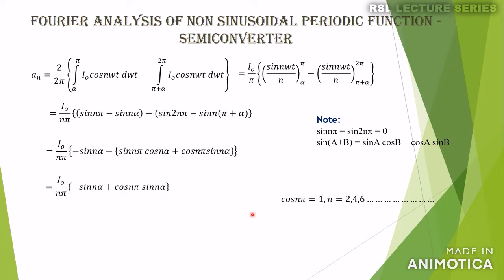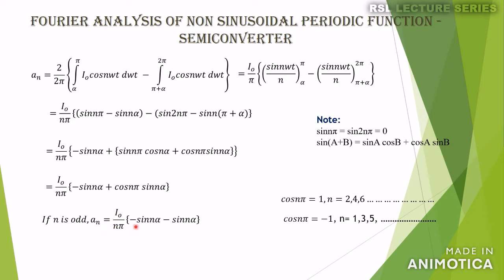cos(n·pi) equals 1 for n = 2, 4, 6, etc., and cos(n·pi) equals minus 1 for n = 1, 3, 5, etc. For odd values of n, An equals (I0/n·pi) times [minus sin(n·alpha) minus sin(n·alpha)], giving minus 2I0 sin(n·alpha) divided by n·pi. For even values of n, minus sin(n·alpha) plus sin(n·alpha) equals zero, so An equals zero. Therefore An equals minus 2I0/(n·pi) times sin(n·alpha) for odd values of n.